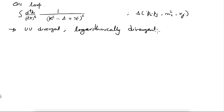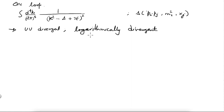When one says something is logarithmically divergent or quadratically divergent, one is imagining a cutoff, because if you use dimensional regularization you are not going to get a logarithmic dependence on the cutoff. We will see what you get, but it will not be logarithmic. The moment you say logarithmic or quadratic, these statements assume that you are working with a cutoff regulator.